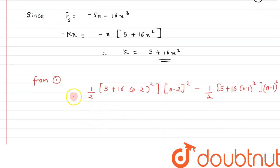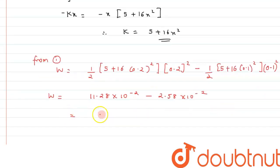And solving it further, we will get W and that is equal to this value comes out to be 11.28 × 10⁻² and here it comes out to be minus 2.58 × 10⁻². This is the value and after solving we will get the answer as 8.7 × 10⁻² joule.